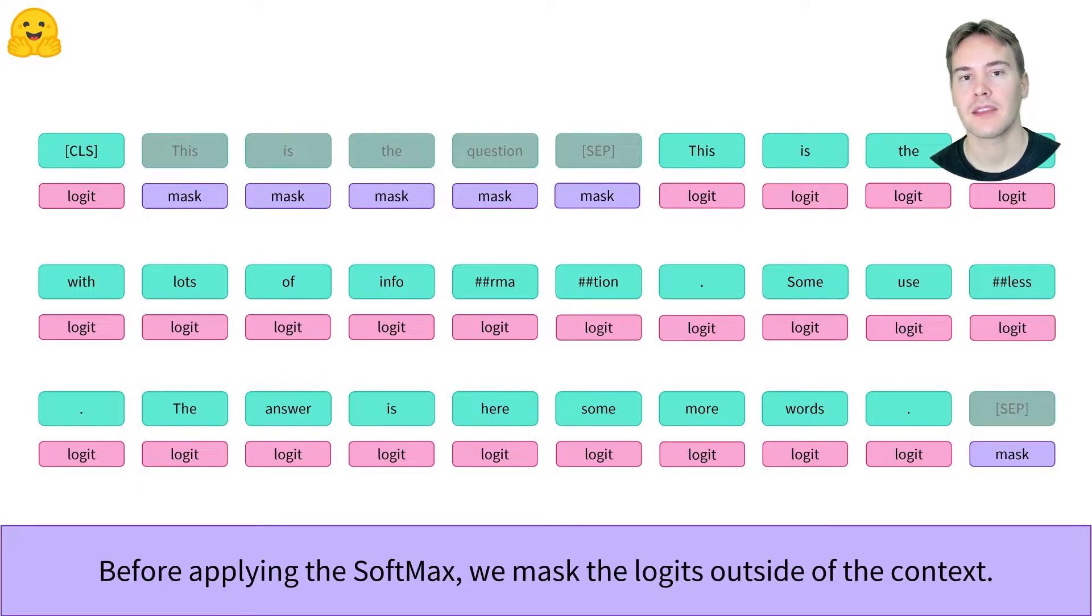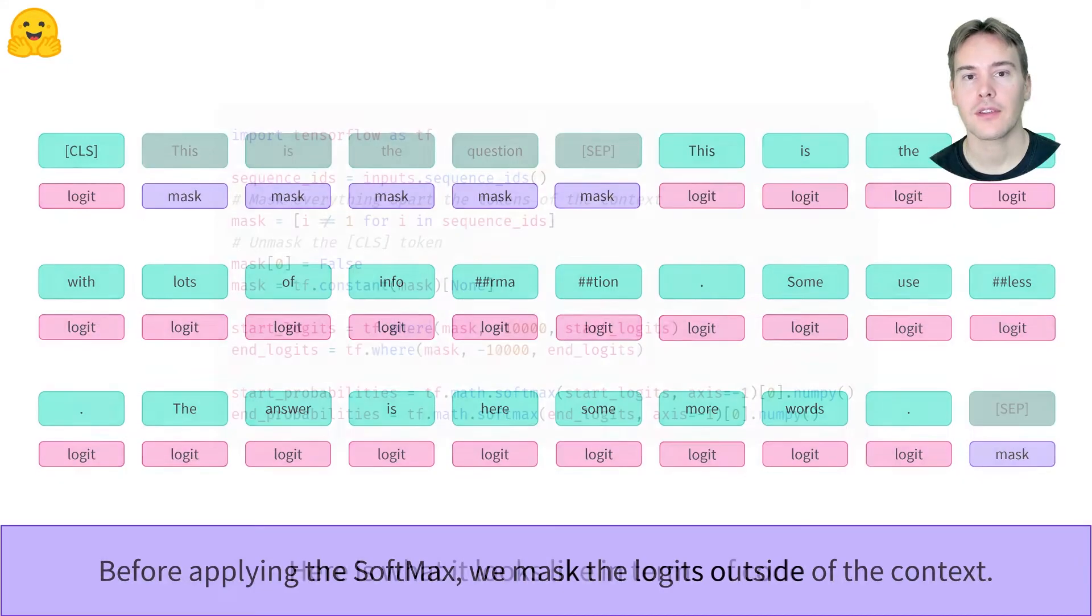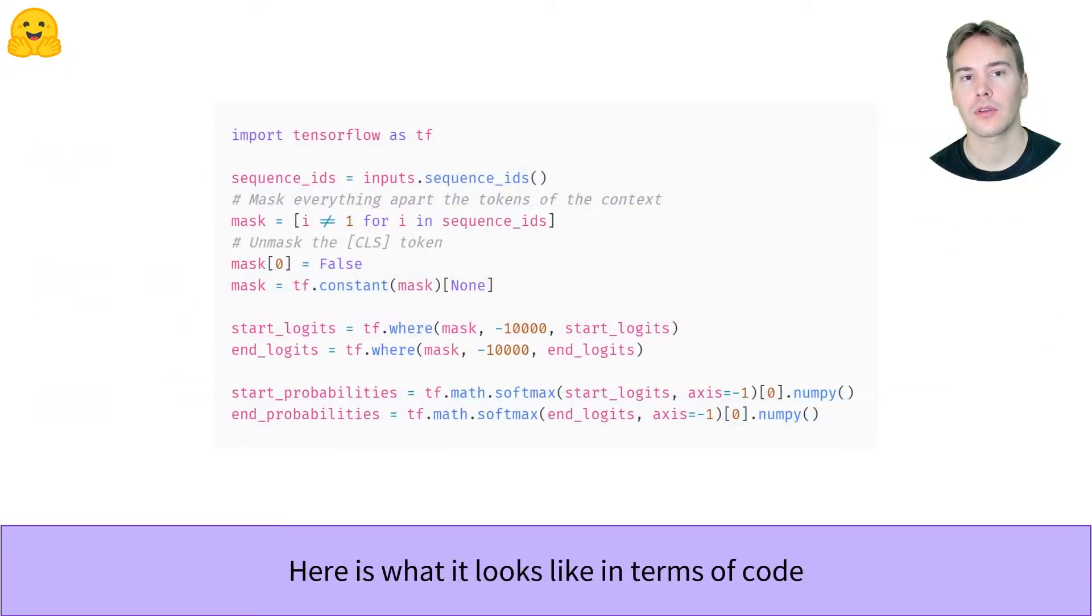We leave the initial CLS token unmasked as we use it to predict an impossible answer. This is what it looks like in terms of code. We use a large negative number for the masking since its exponential will then be zero.